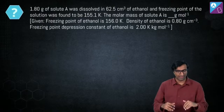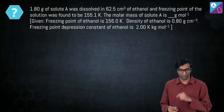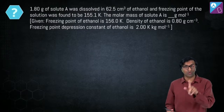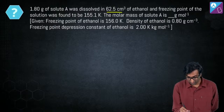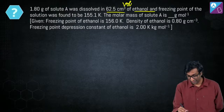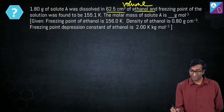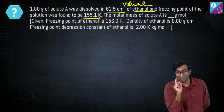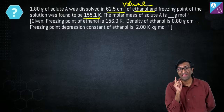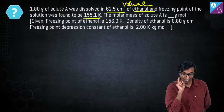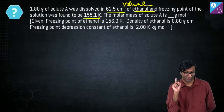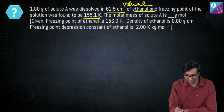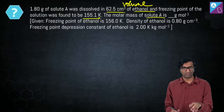Question four: 1.8 g of solute A is dissolved in 62.5 cm³ of ethanol. The freezing point of the solution is given. Important: the solvent is ethanol, not water — don't use water's Kf. The molar mass of solute A is what we need to find. The freezing point of pure ethanol is 156 K; the freezing point depression is 0.9 K. Density of ethanol is also given to convert volume to mass.